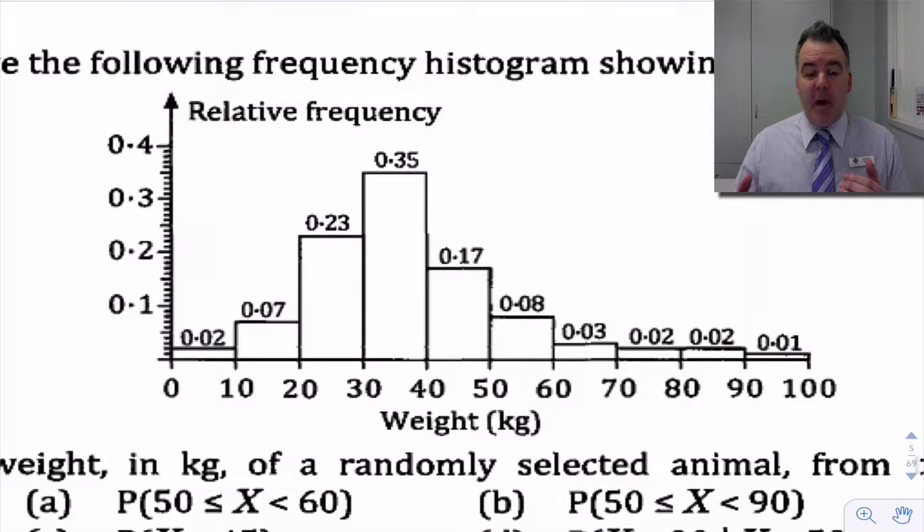So here's the histogram based on that data, based on that table. You can see we've got relative frequency on the y-axis, not just frequency. And now we could relate the questions, what's the probability that animals fall into a certain category?